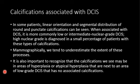Key features to watch for: linear orientation and segmental distribution, or round and punctate features — these help you suspect DCIS. When associated with DCIS, calcifications are seen more in low or intermediate grade. Higher nuclear grade, more aggressive forms of DCIS usually do not have calcifications.